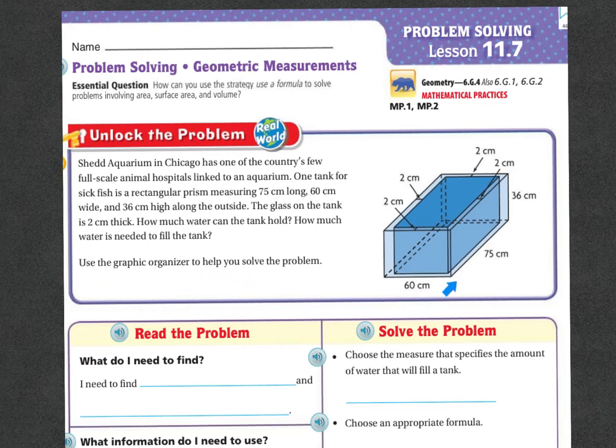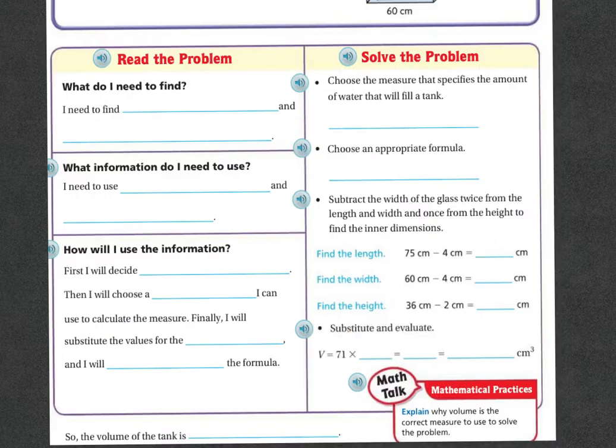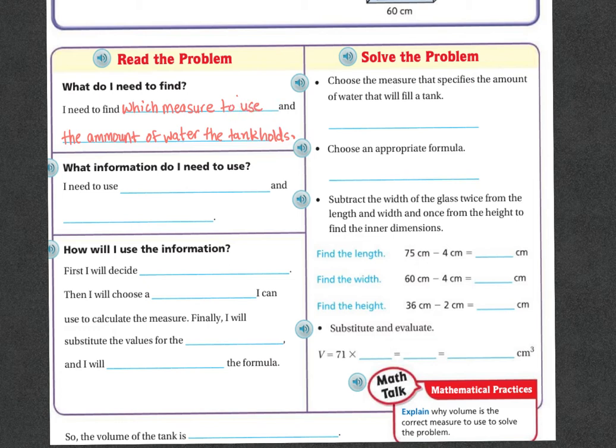So we have our 60, 75, and 36, and then all the way around this glass is two centimeters thick. So what do I need to find? I'm going to need to find which measure to use and the amount of water that the tank holds. What information do I need to use? I need to use the dimensions of the tank and the thickness of the glass.